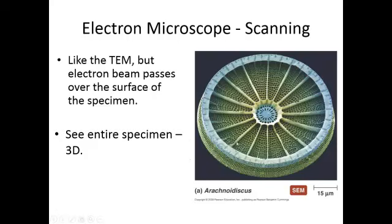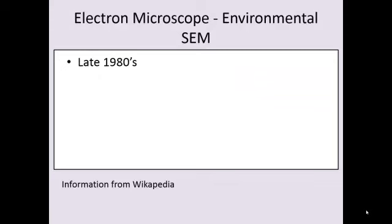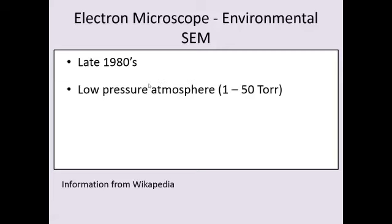So we see the entire specimen instead of just a little slice of it. And there's still problems with artifacts because, once again, you've got to dehydrate these puppies. Now, there is a different type of SEM. It's called the environmental SEM or E-SEM. It was developed in the 1980s when somebody said, but I want to see live stuff. They developed a scanning electron microscope that could operate in lower pressures instead of vacuums.